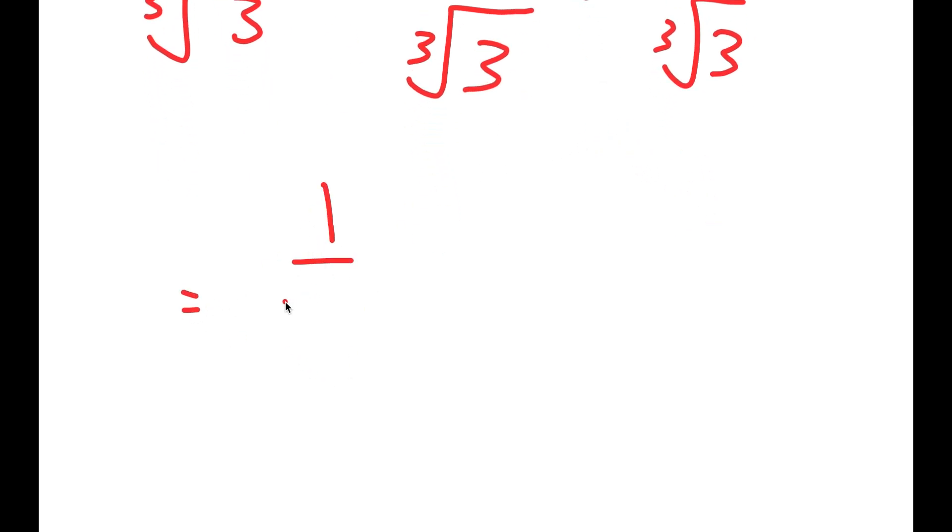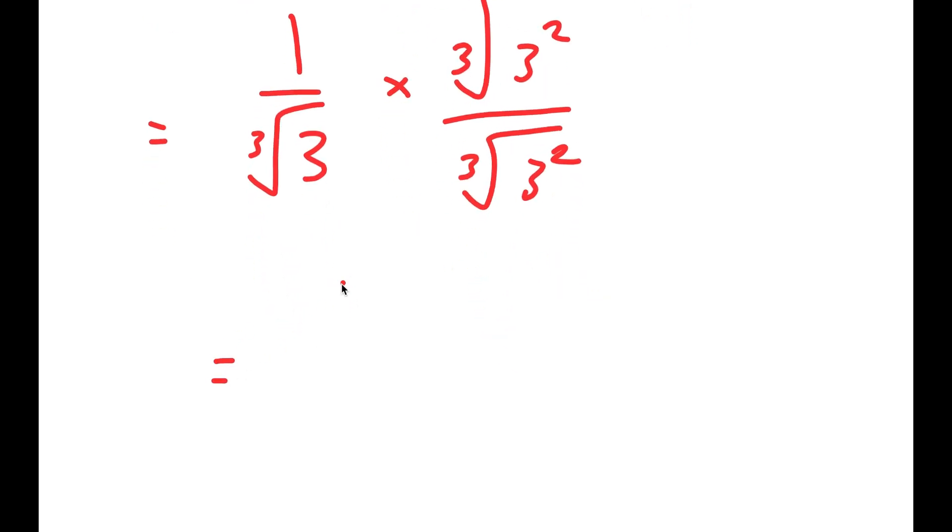Now, to simplify 1 over the cube root of 3, I'm going to multiply it by the cube root of 3 squared over the cube root of 3 squared. So now I get the cube root of 9 over the cube root of 3 times the cube root of 9, which is the cube root of 27.